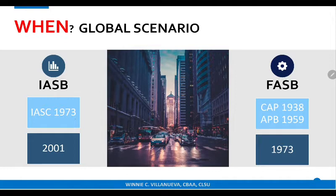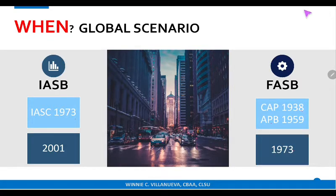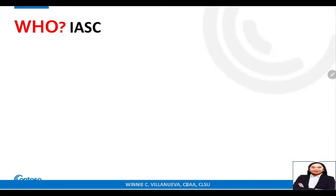The FASB's predecessor, the Committee on Accounting Procedure (CAP), started in 1938, then in 1959 it became the Accounting Principles Board (APB). After that, the FASB took over, and it remains the standard setter up to now.